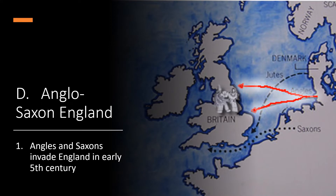Anglo-Saxon England: Angles and Saxons invaded England in the early fifth century after Rome abandoned the province. The Angles and Saxons came from Denmark and northern Germany and carved out kingdoms in places like Kent in southeast England.